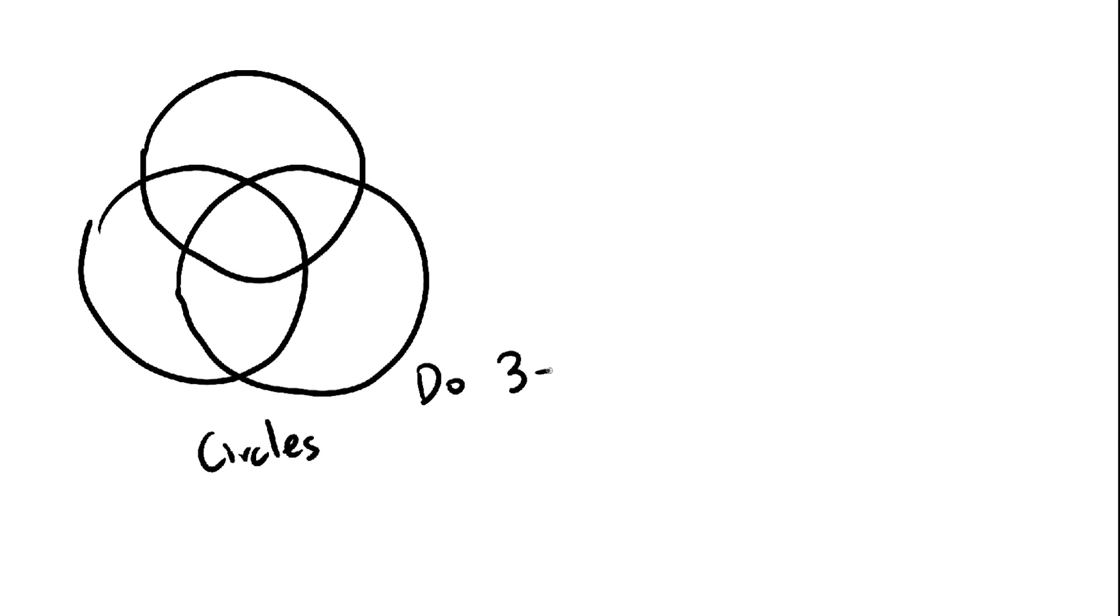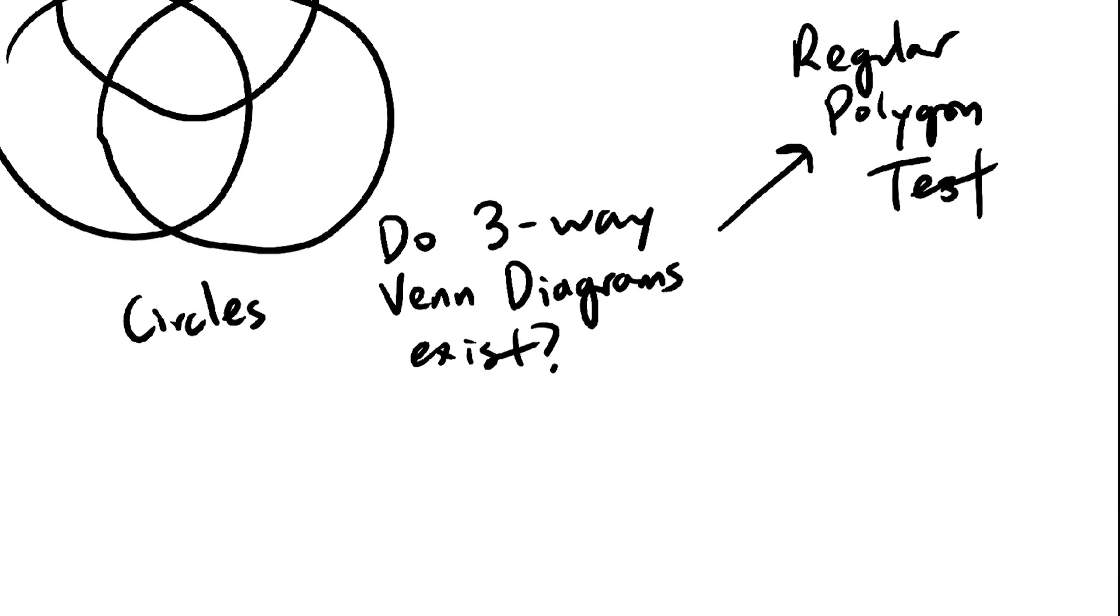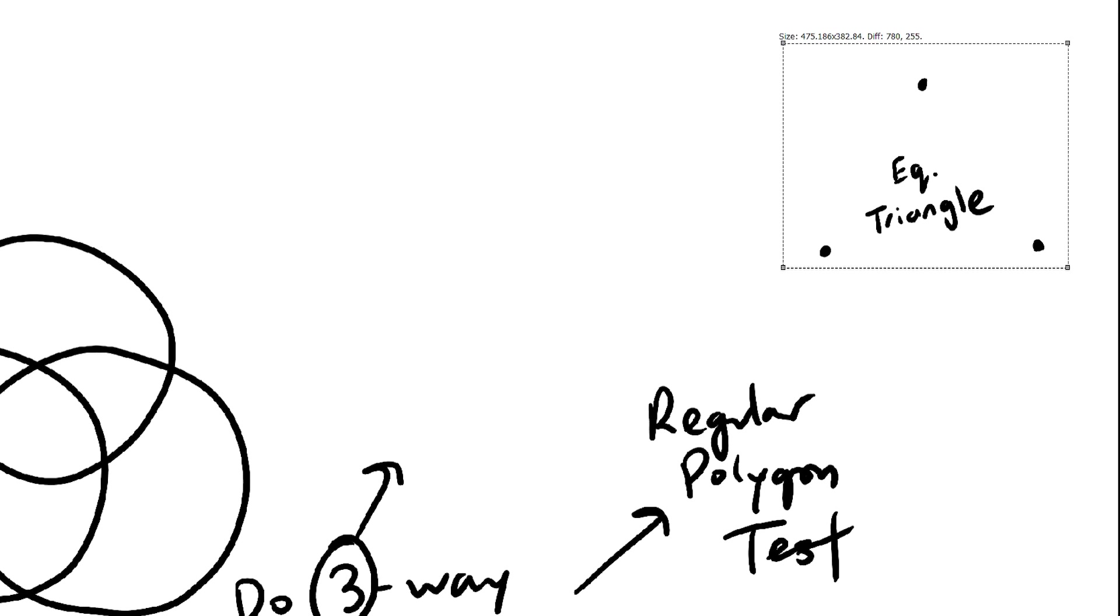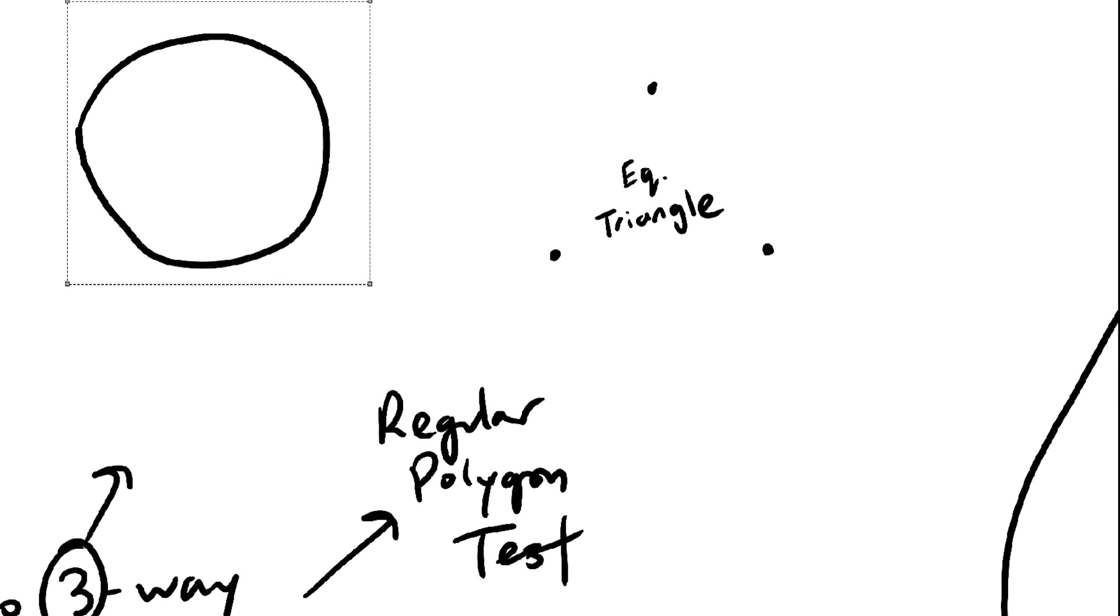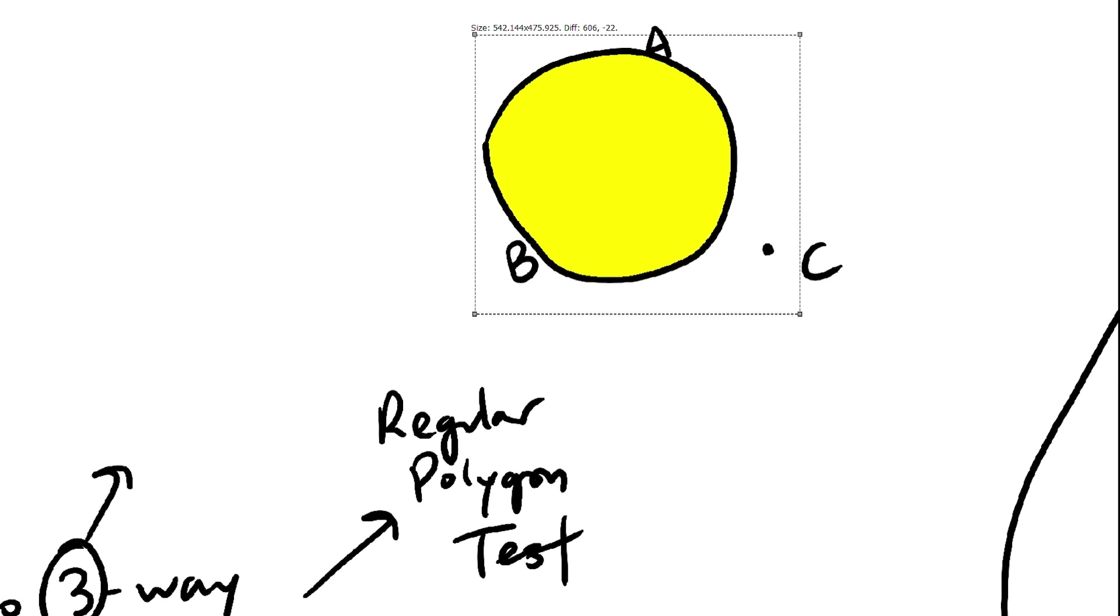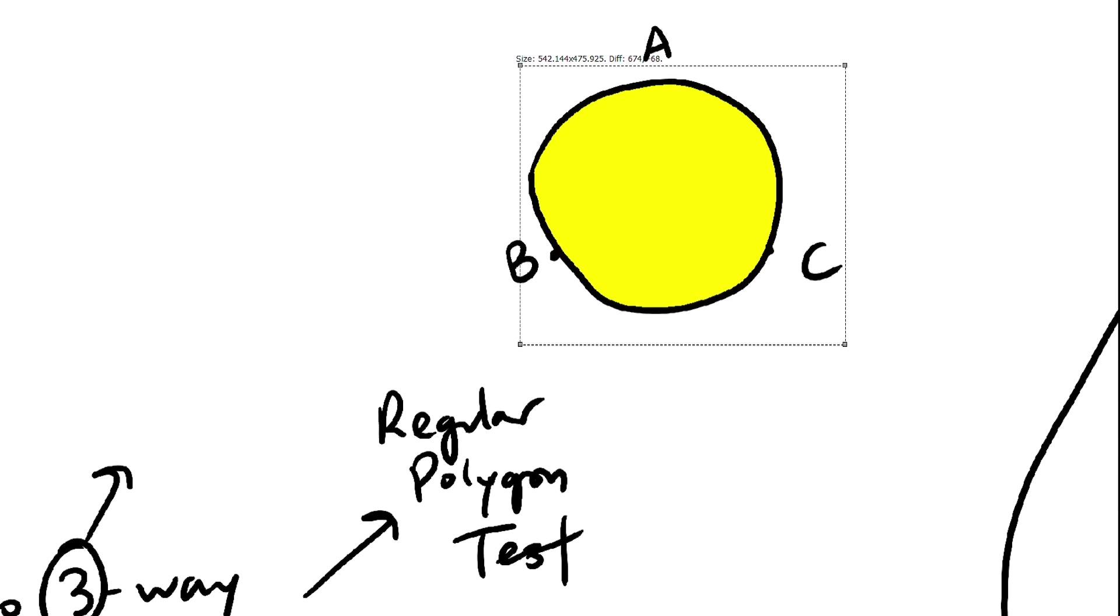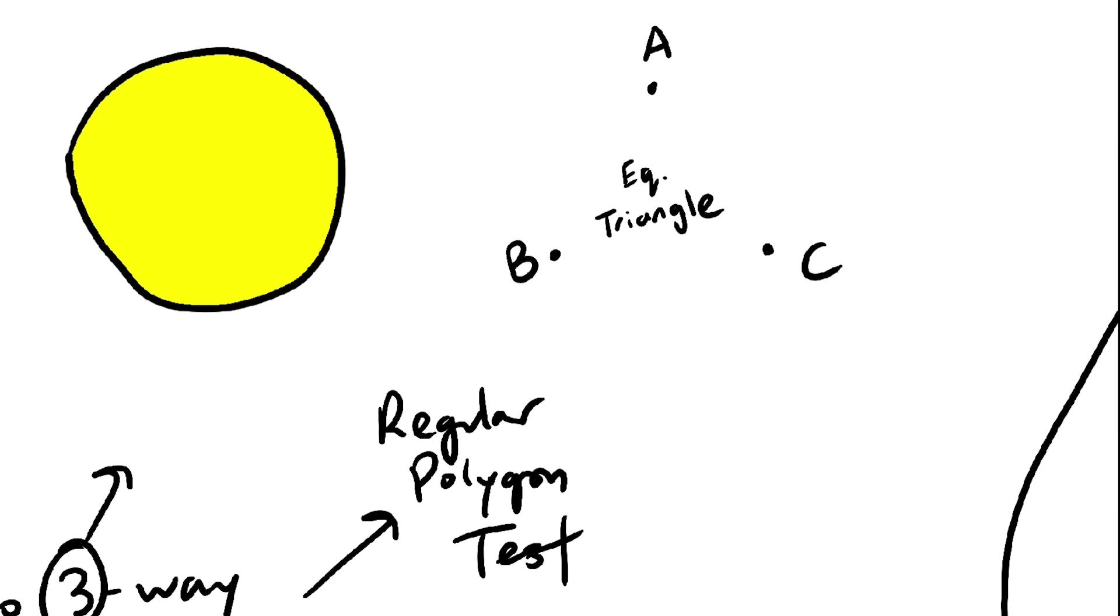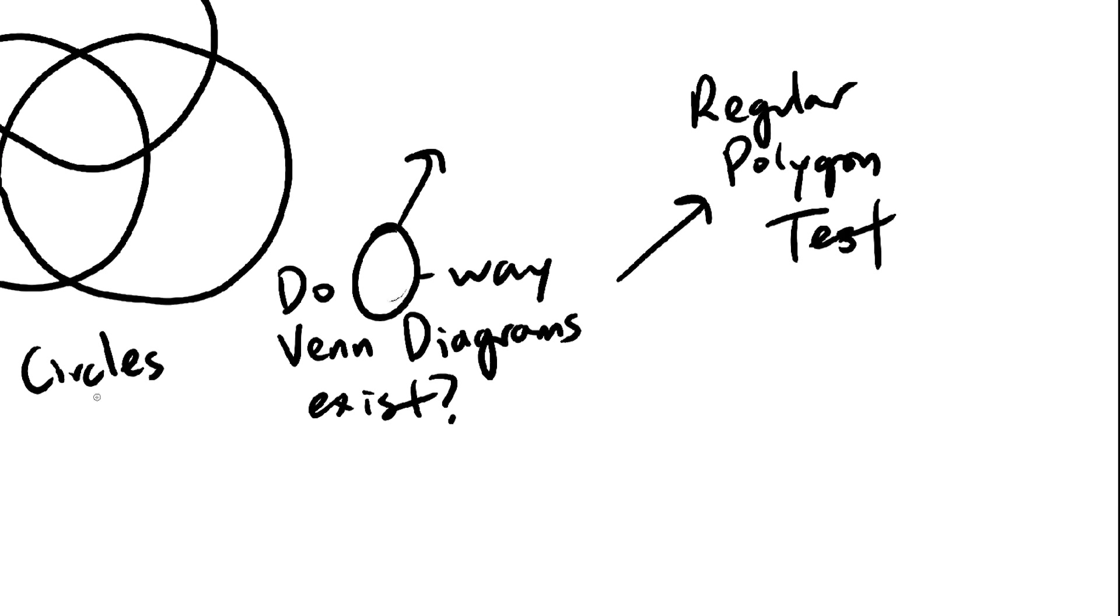Let's go all the way back to circles again. We want a 3-way Venn diagram. Is that possible with circles? Well, let's answer that with the regular polygon test. We want 3-way, so take the corresponding regular polygon, an equilateral triangle. Now we will take a circle and try to contain every possible combination of the points with the circle. Here's what I mean. If I say, I want points A and B in the circle, but not C, I can make it happen. And every other combination works as well. Therefore, by the regular polygon test, the 3-way Venn diagram is possible using circles.